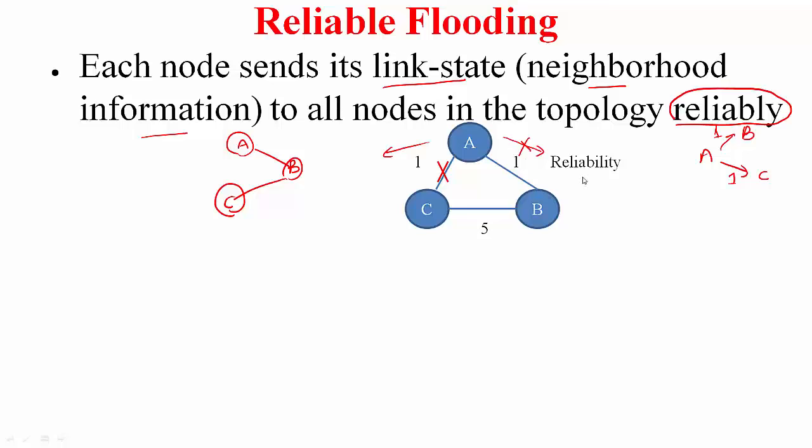Now what does B think? B thinks that this is the entire topology. So to reach C, B will send packets here, whereas to reach C, A is going to send packets here. So the packets will now get stuck in a loop, which you do not want.